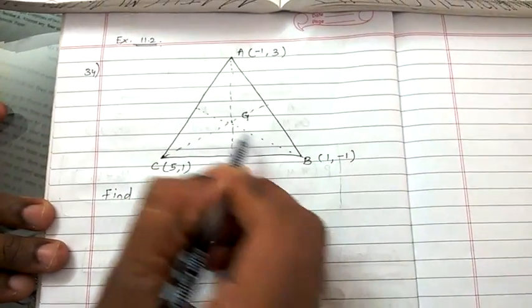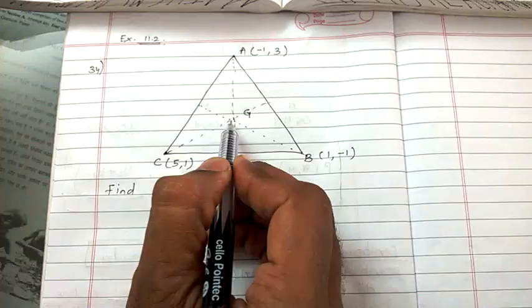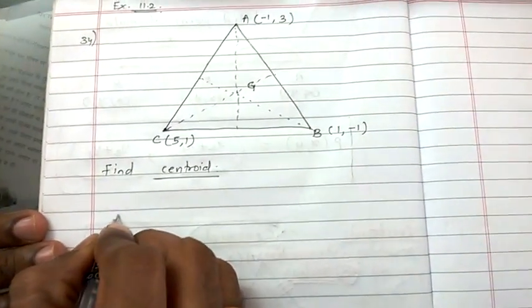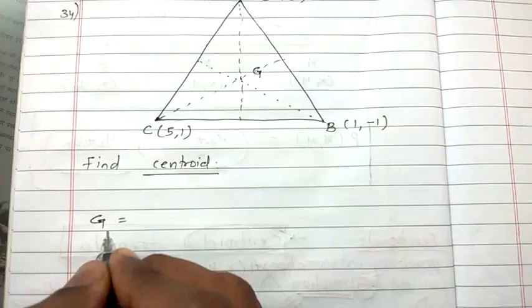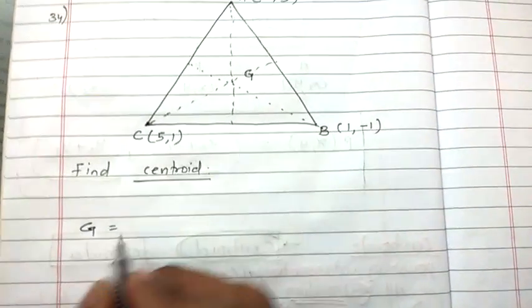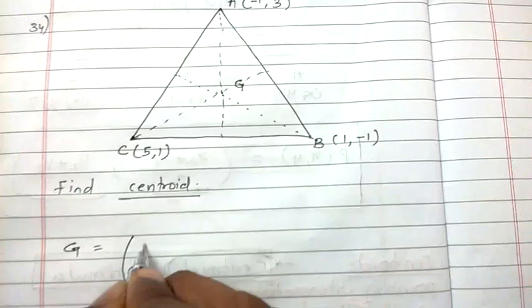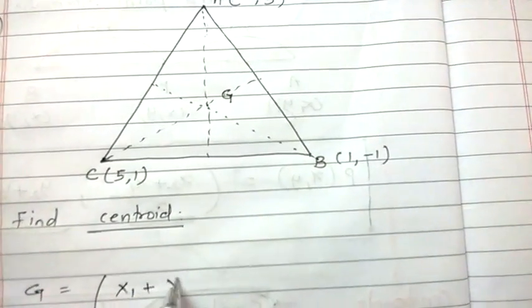Since we have the direct formula, I'll not keep calculating each and everything. I will directly write the formula for centroid. I have just explained in the last video what the centroid formula was. Centroid formula was x1 plus x2